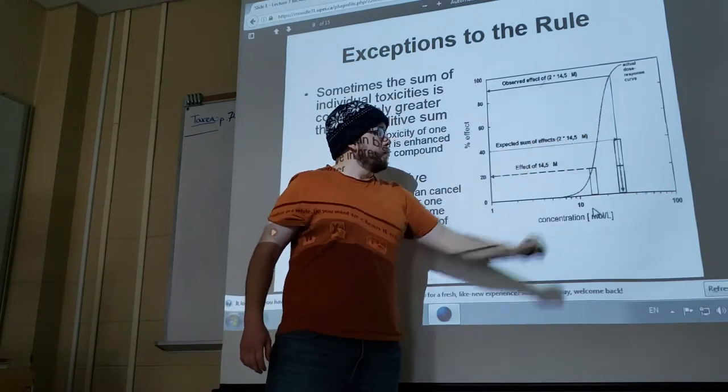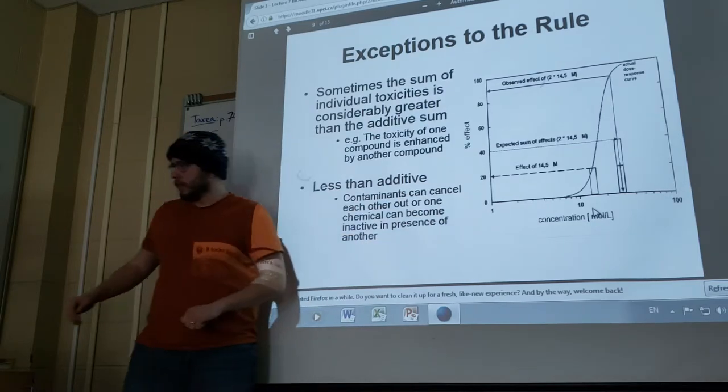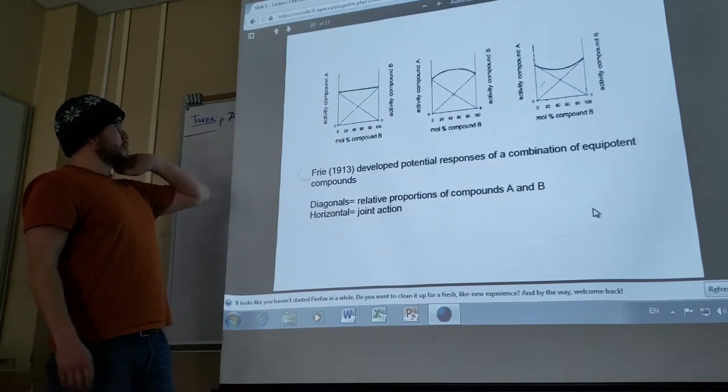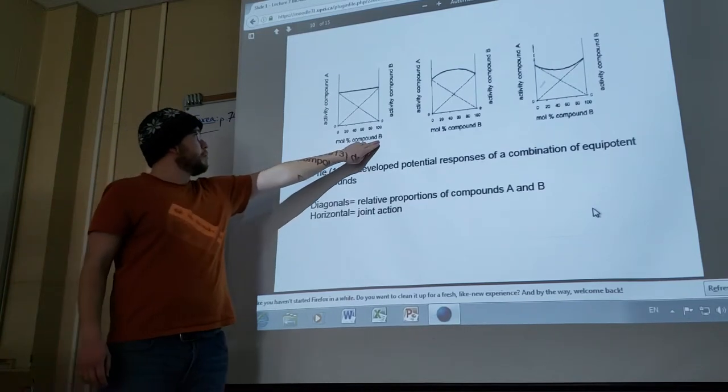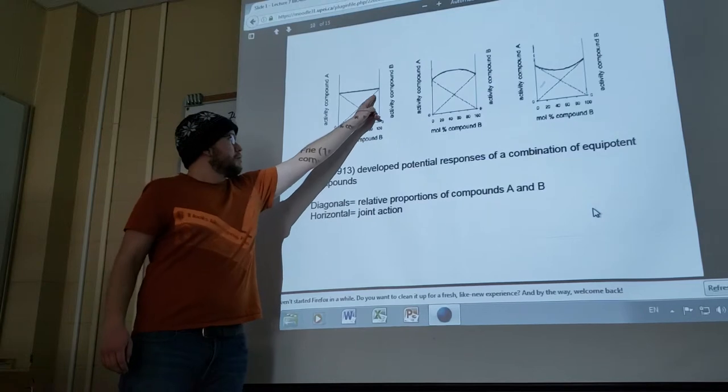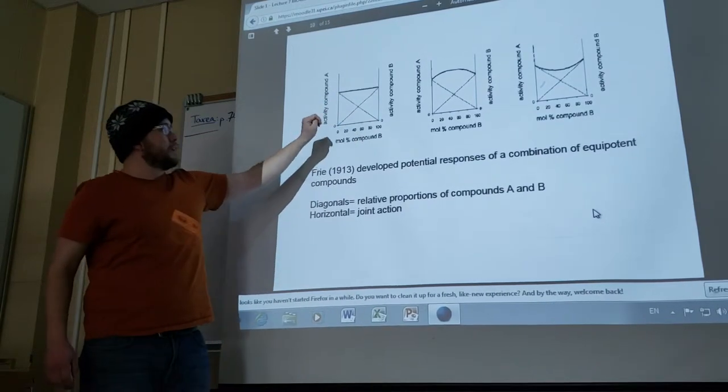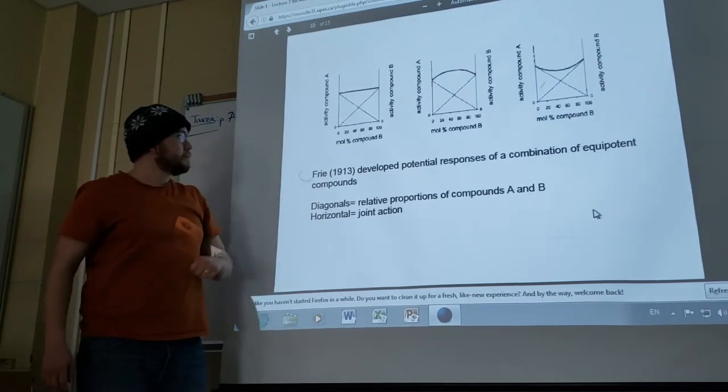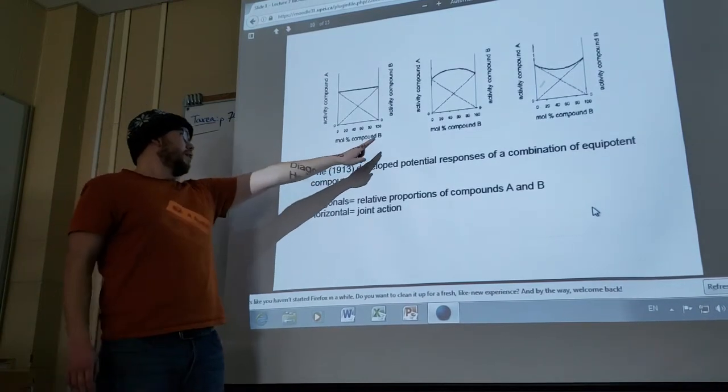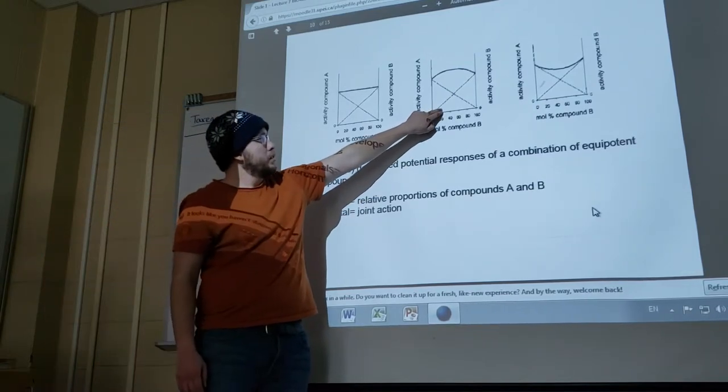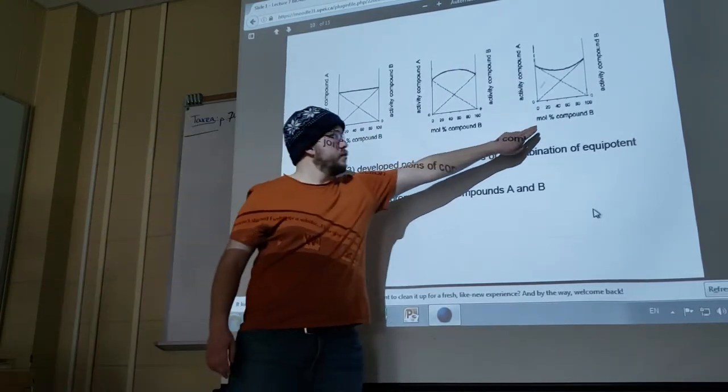Here are some other graphs that we should look at. You can see the mole percentage of compound B and the activity of compound A. As B increases, A decreases. If it's purely additive, it'll be a straight line. Less than additive this one, more than additive.